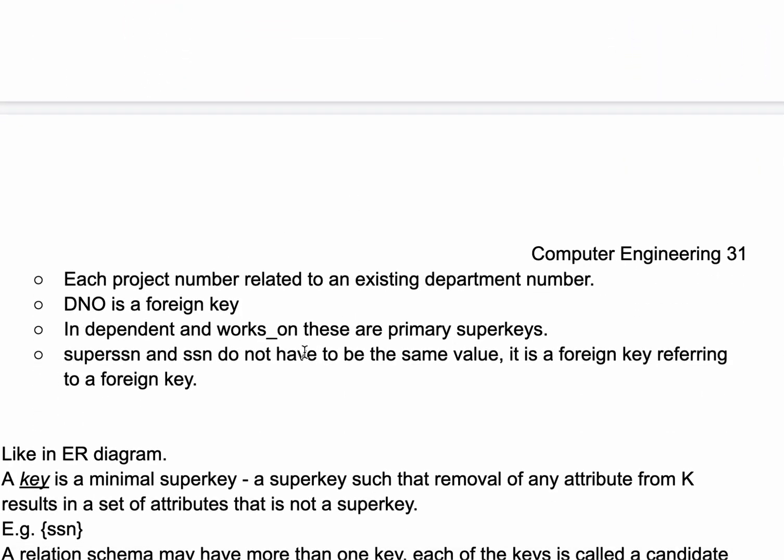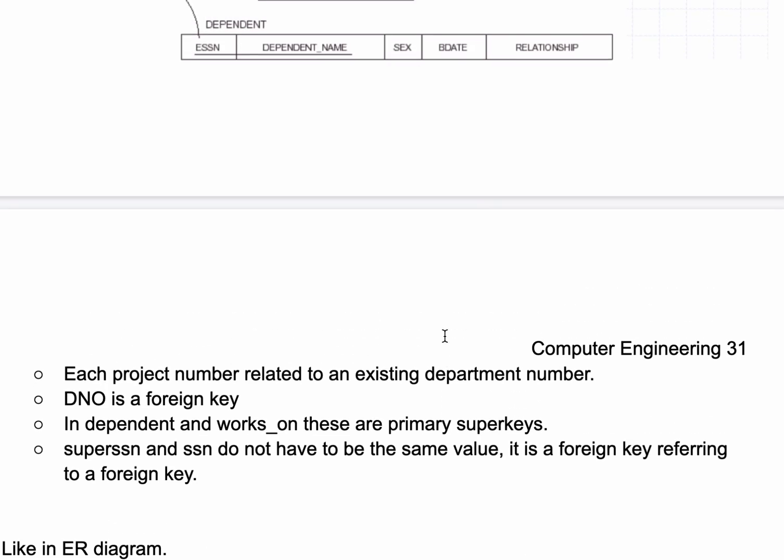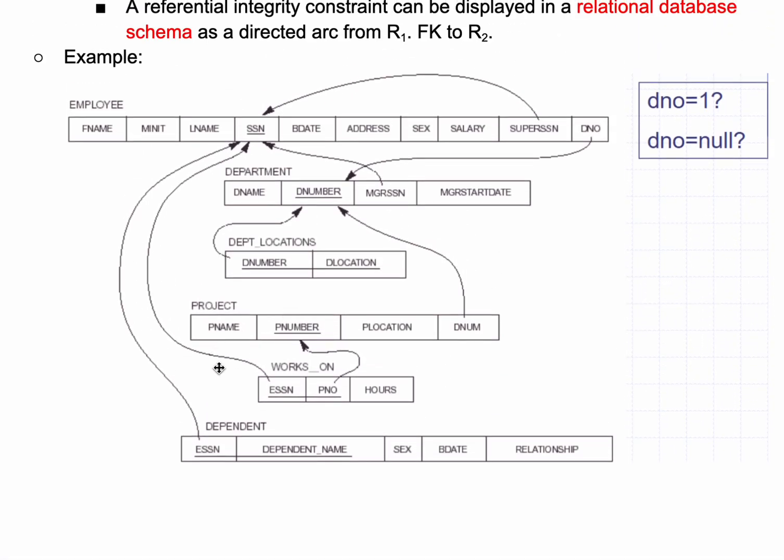Dependent and workson are primary super keys because if we look at workson and dependent, we have our ESSN and PNO, and we also have our ESSN and dependent name. So these are both going to go to our SSN, which is a primary key.